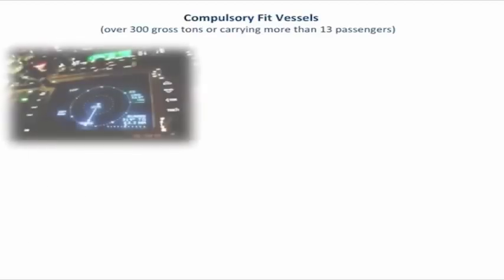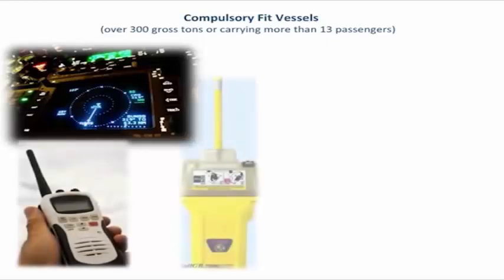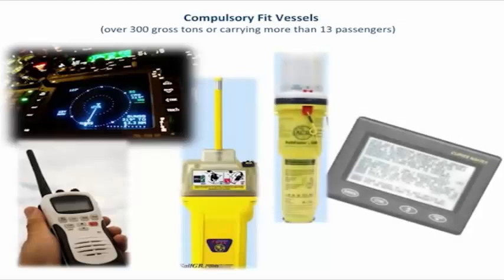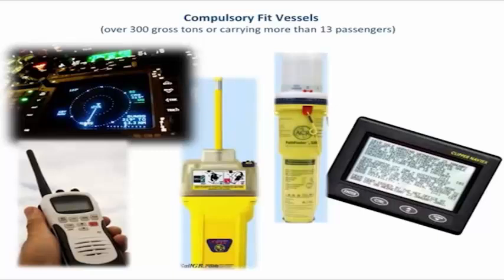In addition to VHF, compulsory fit vessels are required to carry a number of other pieces of equipment. These include radar and waterproof handheld radios, EPIRBs (Emergency Position Indicating Radio Beacons), Search and Rescue Transponders, and NAVTECs. Some of these may be unfamiliar to small boat users, so let's take a look at them here.